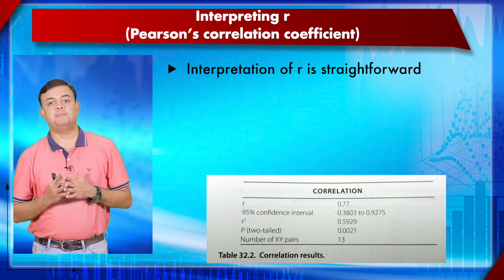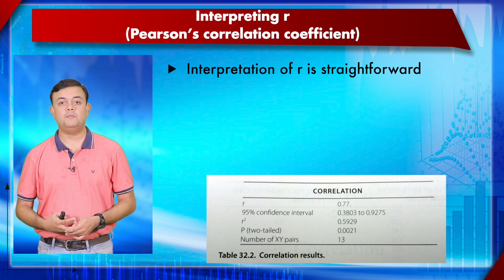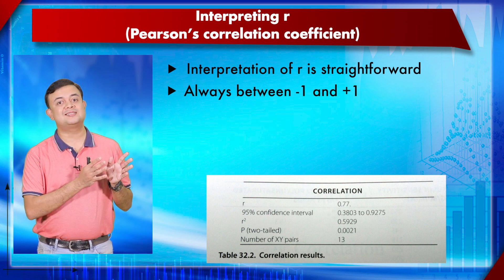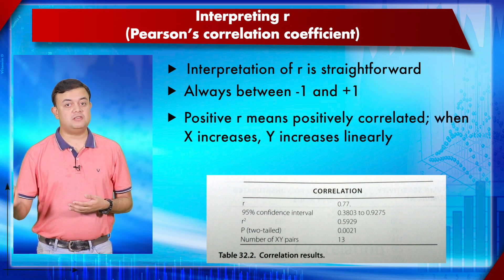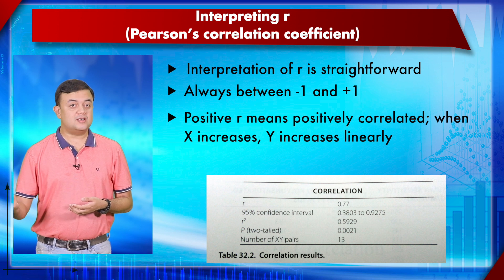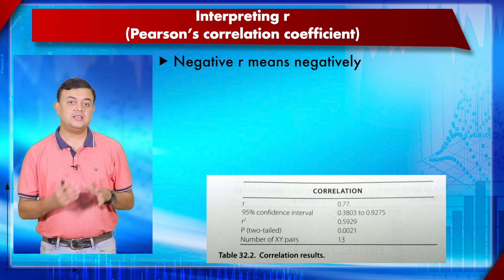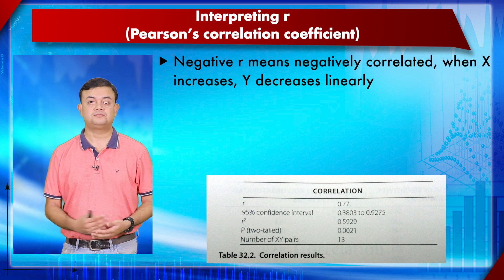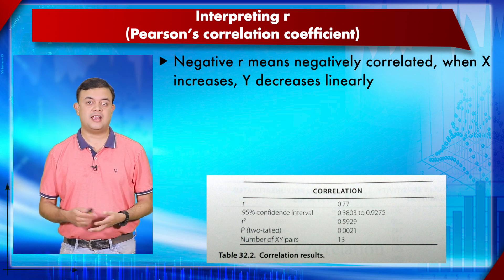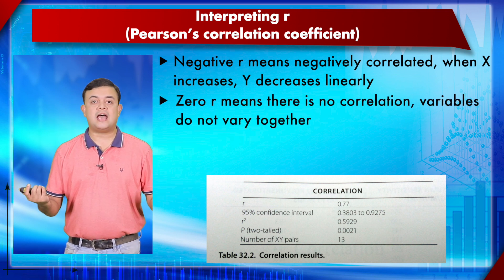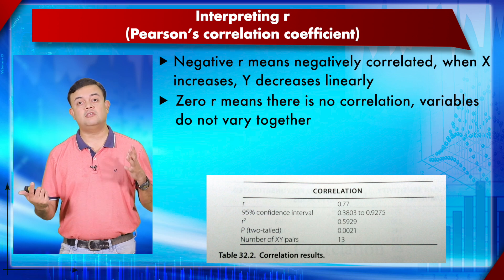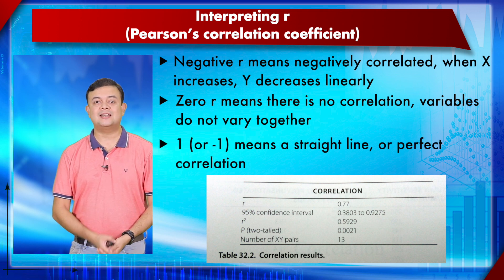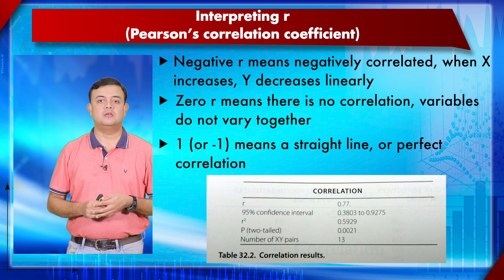Interpreting r is straightforward: it is always between −1 and +1. Values close to +1 or −1 indicate strong linear correlation. Positive r means the variables are positively correlated — as x increases, y increases linearly. Negative r means negatively correlated — as x increases, y decreases linearly. A value of 0 means there is absolutely no correlation; the variables do not co-vary at all.